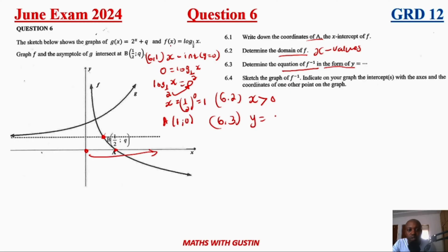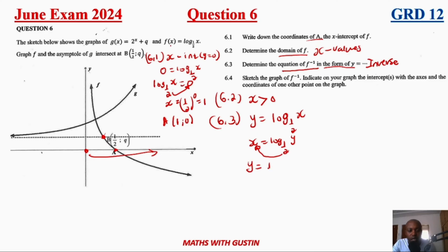Question 6.3 asks for the equation of f inverse in the form y equals... They're asking for the inverse of f(x). What you do is swap x and y, then solve for y again. So: x = log_(½)(y), which means y = (½)^x. That removes the log and this now becomes an exponential function.